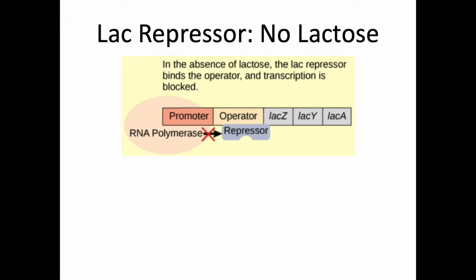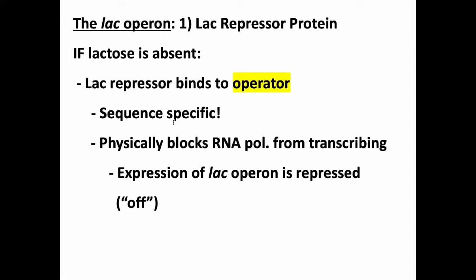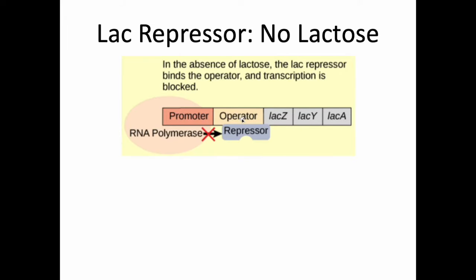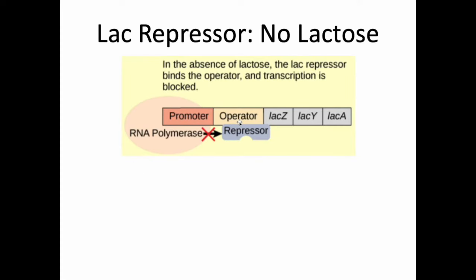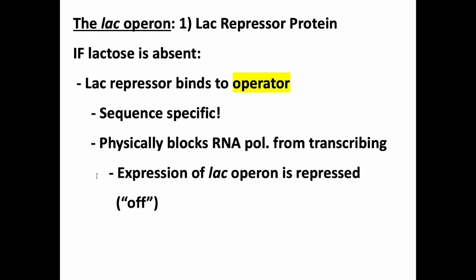Let's zoom in. There's the promoter, RNA polymerase, our three important genes in the operon, the operator, and the repressor protein. The repressor protein binds to this operator, and this is going to shut the whole thing down. RNA polymerase is supposed to create a transcription bubble and move along, but if there is a big protein stuck in the way, this is a roadblock that prevents RNA polymerase from moving onto these genes — shutting down transcription. Lac repressor binds to the operator in a sequence-specific manner; it recognizes a specific DNA sequence and represses just this operon. Expression of the lac operon is repressed — off — because there's no lactose around. Don't make useless proteins.